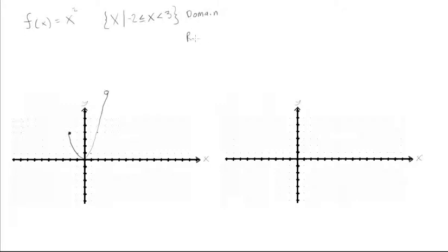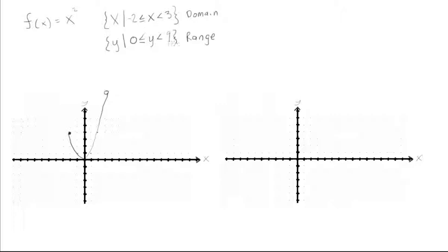So what's our range for this function? Well the range would be — looking at this, it goes down and it touches the point 0, so y is greater than or equal to 0. As it touches 0 here, and then as it comes up and approaches 3, it's getting closer and closer to y = 9, but it's not actually going to touch. We'll get more into that in the limits section coming up, but it will be smaller than 9 — it just won't actually touch 9.